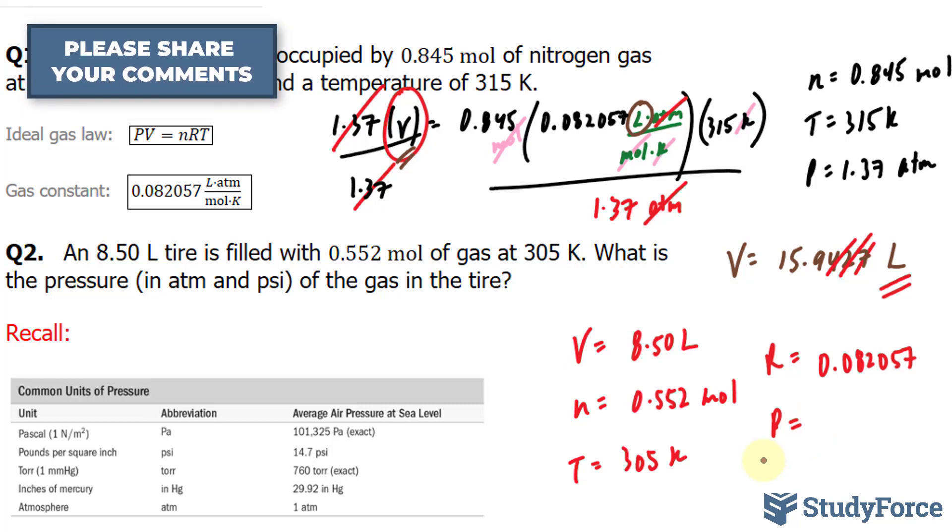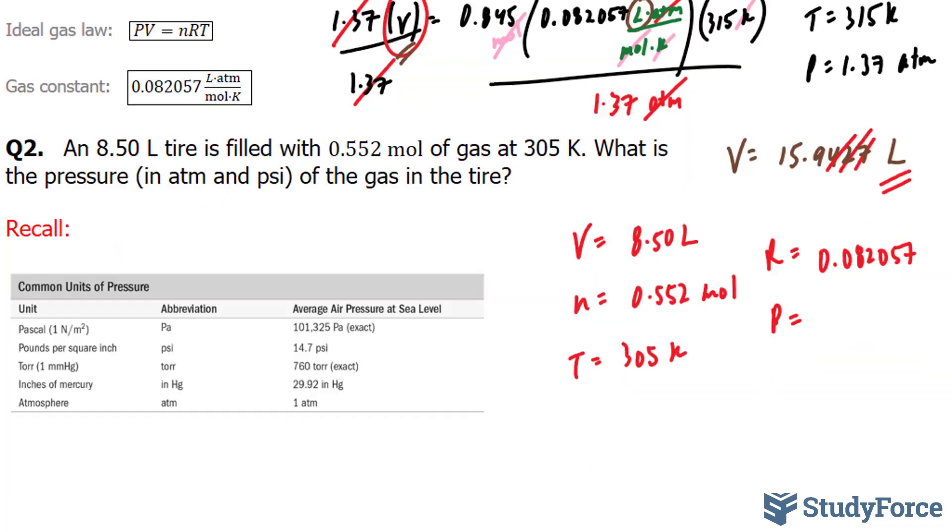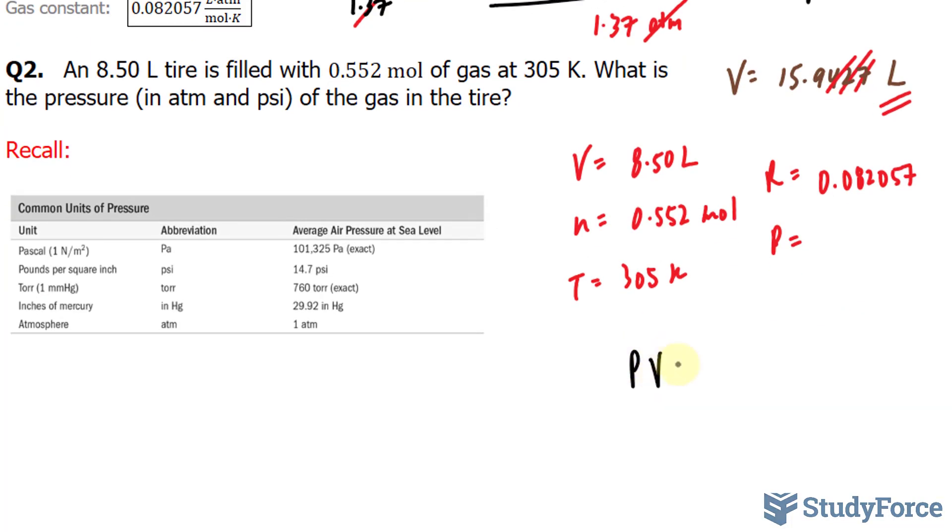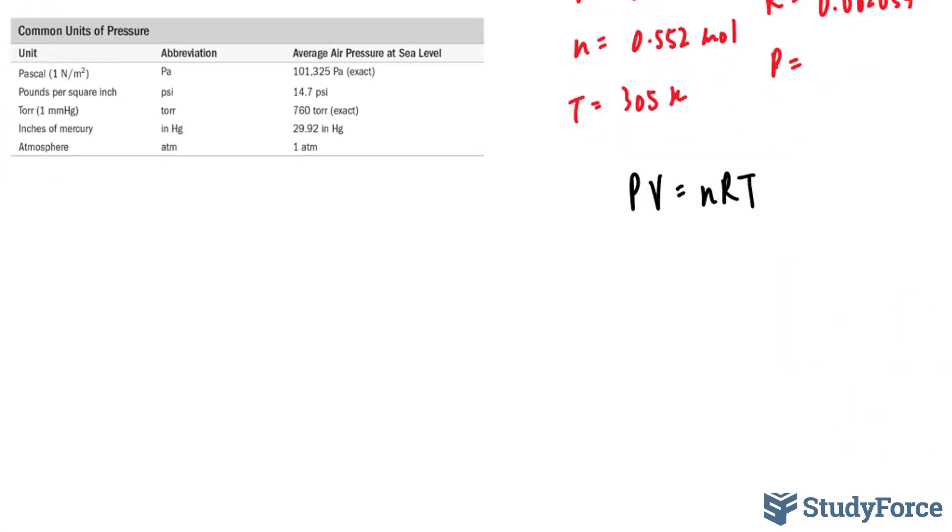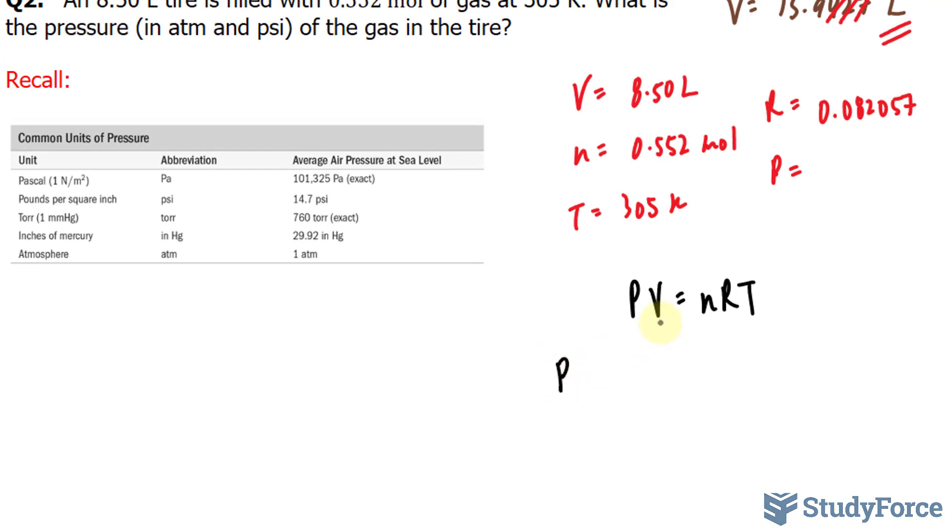So we're going to find in ATM atmosphere, and then we'll convert it into PSI. Let's go ahead and do that. Let's substitute all of these numbers into our formula. PV is equal to nRT. Our pressure is what we're looking for, and what I can do from the start is divide both sides by V. If I divide both sides by V, the Vs on the left side go away. So technically, we have the pressure is equal to nRT over V.